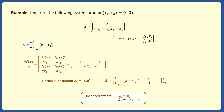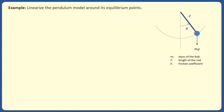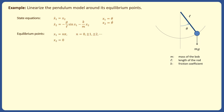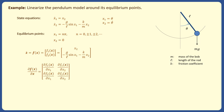In the second example, we want to linearize the pendulum model around its equilibrium points. As explained in the previous lectures, the state equations are in this form, where x1 is theta and x2 is theta dot. The equilibrium points are x1 equals n pi, where n is an integer, and x2 equals 0. Since f and x are both 2D vectors, the partial of f with respect to x is a 2-by-2 Jacobian matrix. We can calculate each of these derivatives and obtain this matrix.